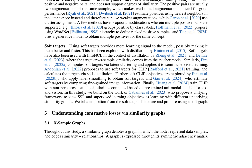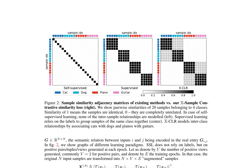A similarity graph is defined as a graph in which nodes represent data samples and edges represent similarity relationships, expressed through its symmetric adjacency matrix. The XCLR loss is designed to learn representations that capture these relationships. The authors compare sample similarity adjacency matrices between existing methods and their proposed approach: in self-supervised learning, no inter-sample relationships are modeled, whereas in supervised learning, samples of the same class are grouped by labels. In contrast, XCLR models inter-class relationships by associating cats with dogs and pianos with guitars.